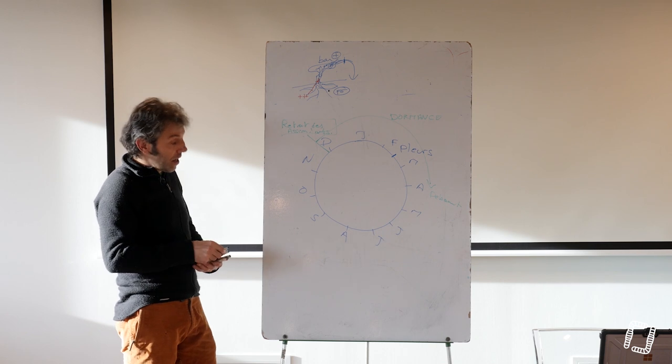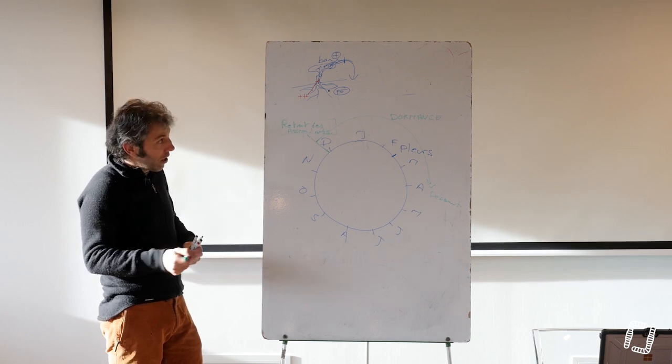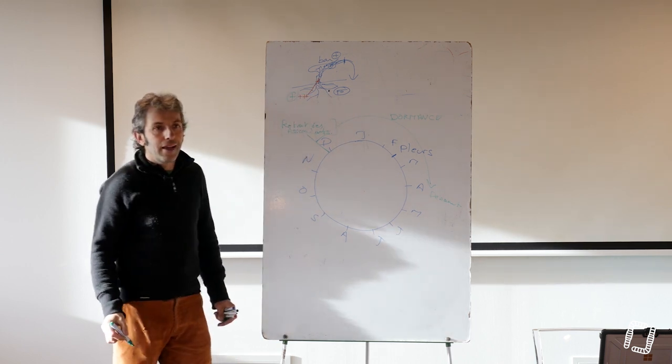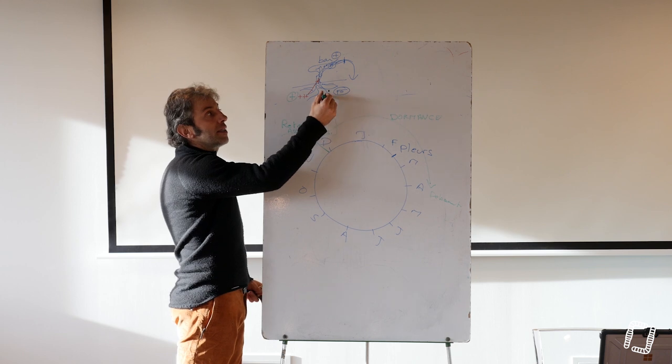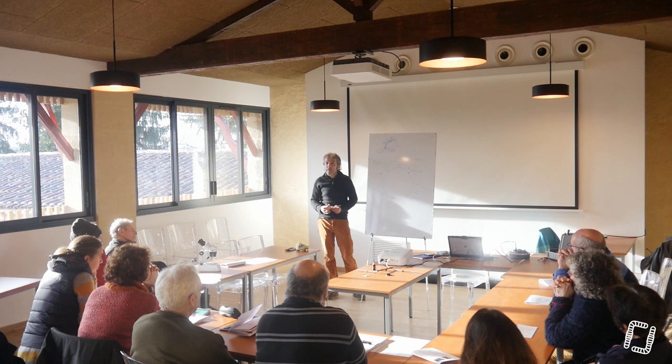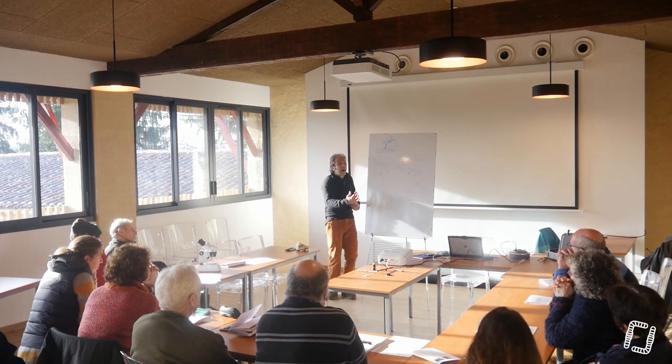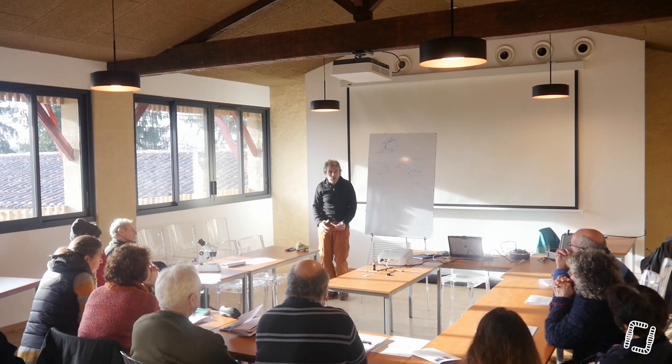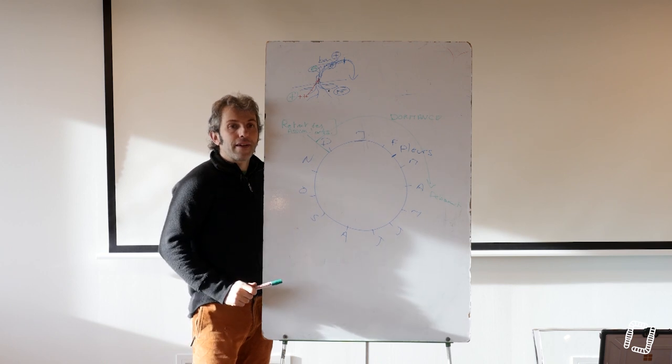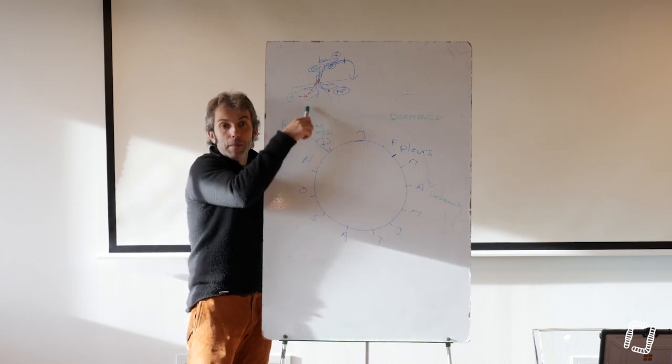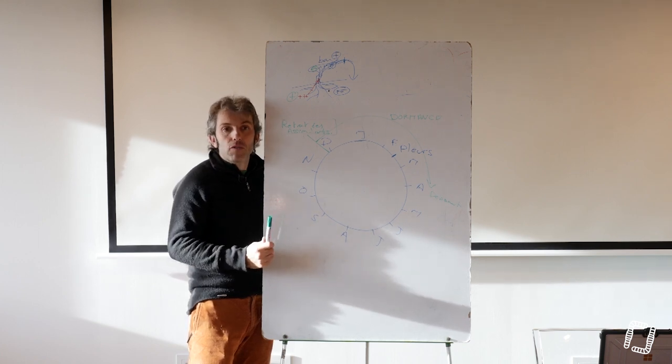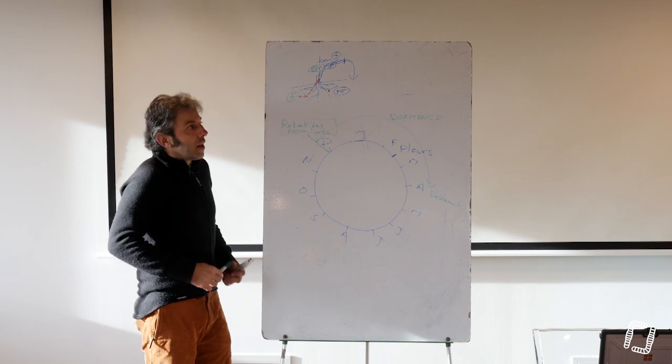À l'inverse, en automne, on se retrouve avec un sol chaud de l'été et un air très froid. Un système racinaire chaud et une plante froide à l'intérieur. Ça va accompagner le retrait des assimilats et mettre l'énergie de la plante dans le sol. Ce n'est pas des montées et descentes de sève. C'est des mises en pression ou en tension à l'intérieur de la plante qui créent ces mouvements.